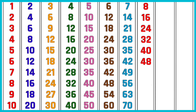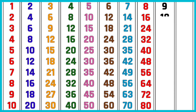8 sixes are 48. 8 sevens are 56. 8 eights are 64. 8 nines are 72. 8 tens are 80. Table of 9. 9 ones are 9. 9 twos are 18.